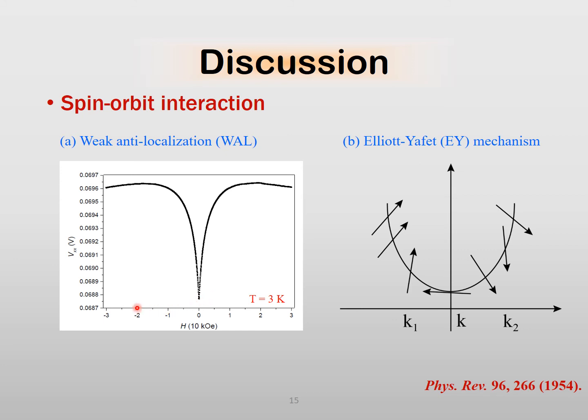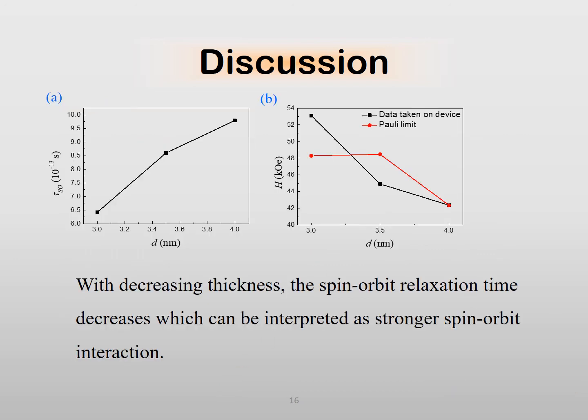In the normal state, we can see positive magnetoresistance, which can be ascribed to weak antilocalization. It is believed that the EY mechanism, which is the main spin relaxation effect in metals, is the dominant spin-orbit coupling effect in our aluminum nanofilm. The atomic mass of aluminum is quite low, so it's perhaps surprising to see some spin-orbit effect in our system. We can see that the estimated spin-orbit scattering time decreases with decreasing film thickness. For the thickest sample, the critical magnetic field is close to the Pauli limit. Only for the thinnest device, we can definitely say that we have seen violation of Pauli limit.